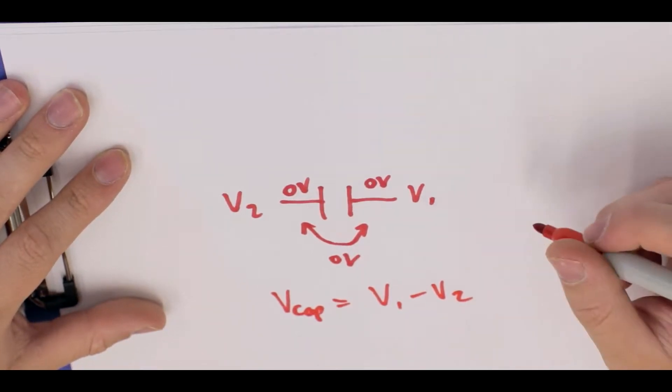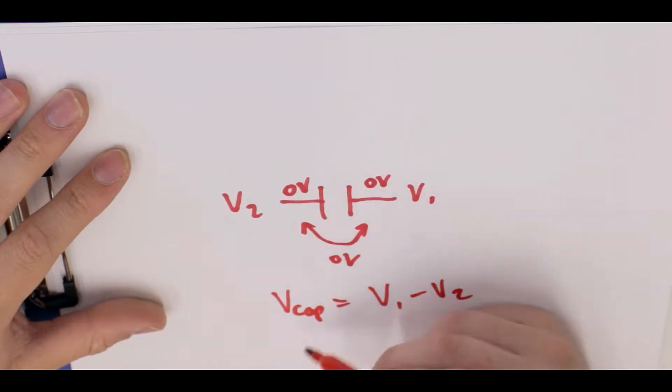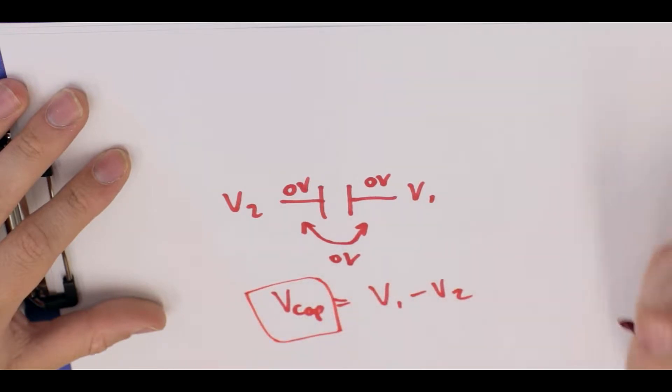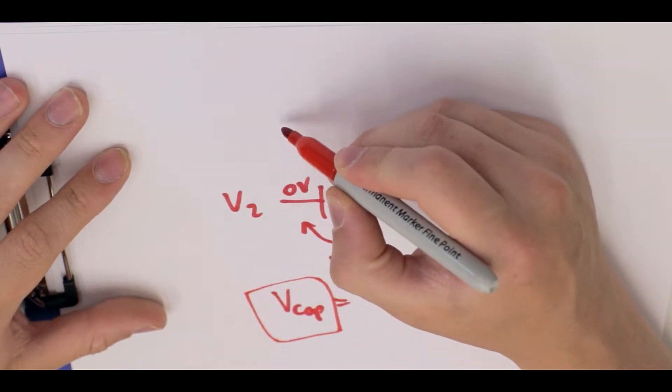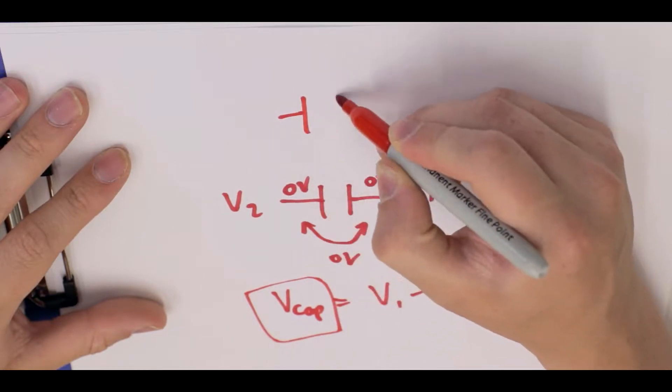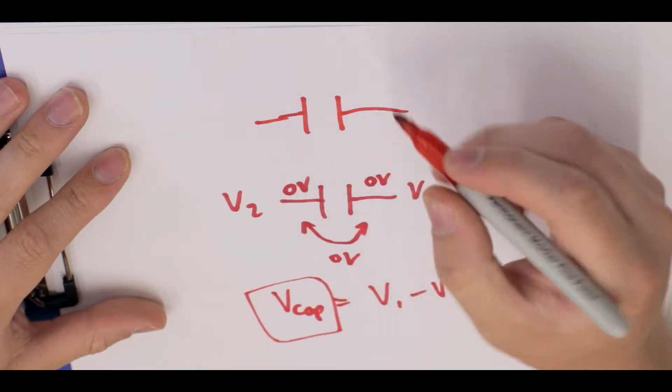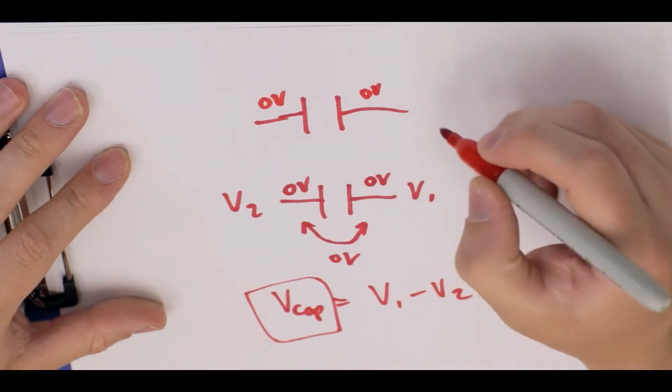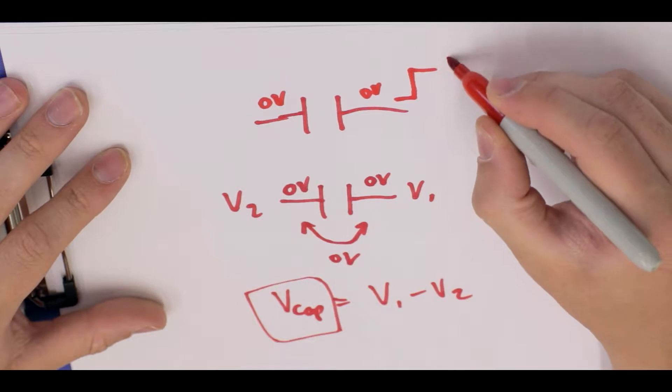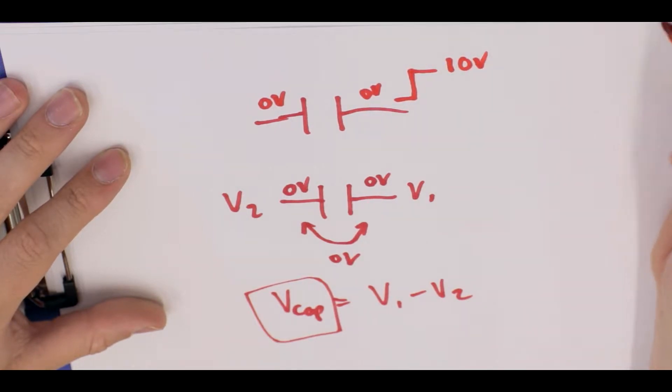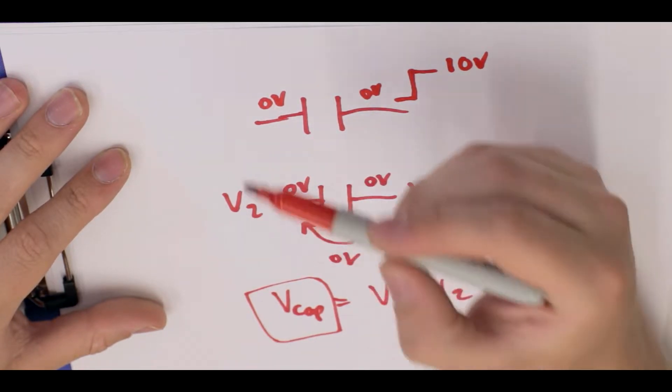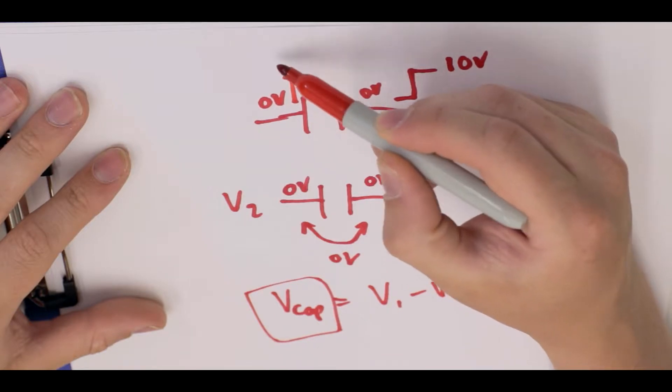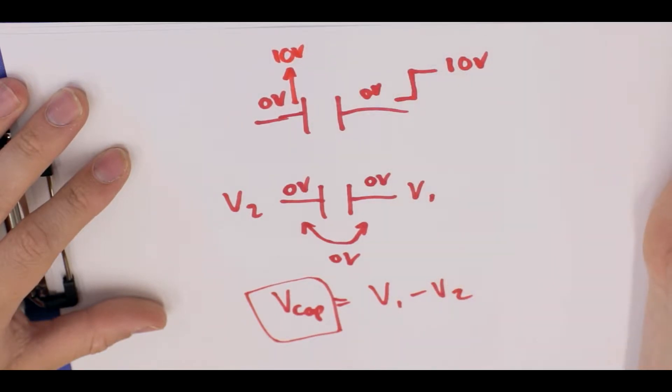Now this is where it gets really cool. The capacitor always wants to try and maintain the same value for that. So for example, if we draw another capacitor down here, and let's say this typically has zero volts and this also typically has zero volts, but then we step it up to 10 volts, right? The other side also goes up to 10 volts because it always wants to maintain V_cap.